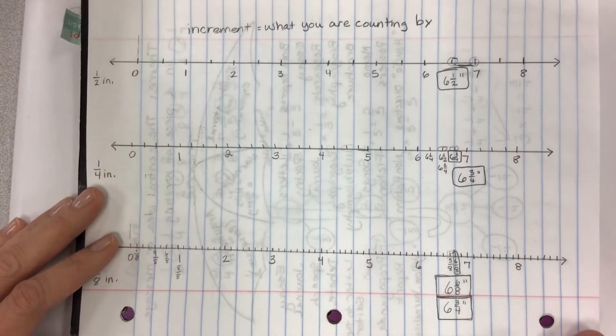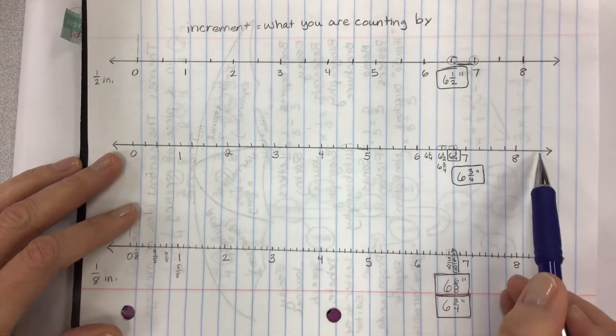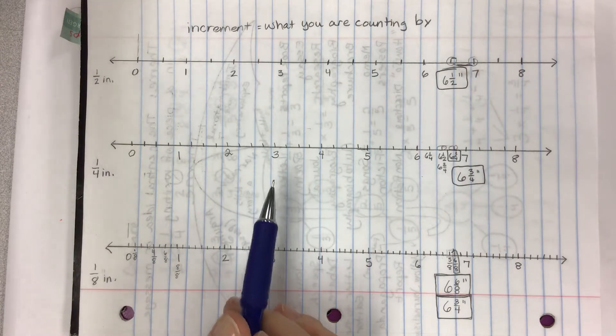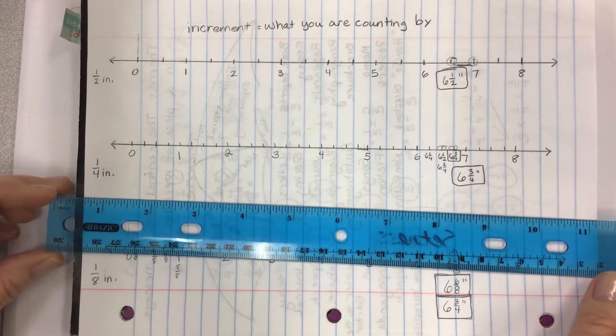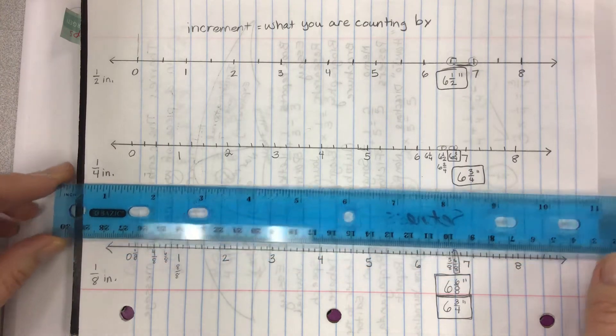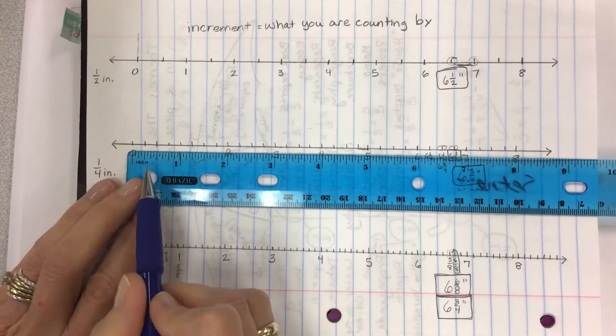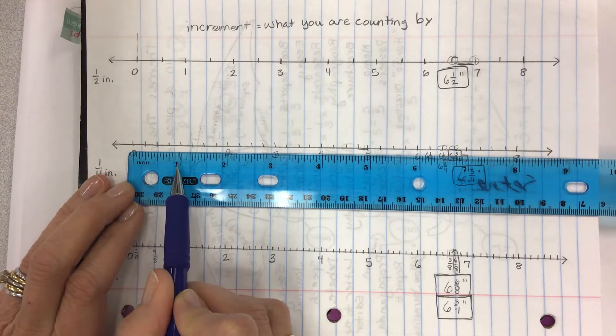Then if you use a different increment and you create a number line and you mark it, and hopefully you'll have a ruler. You're gonna be needing a ruler for lesson one. So go out and get yourself one if you don't have one.